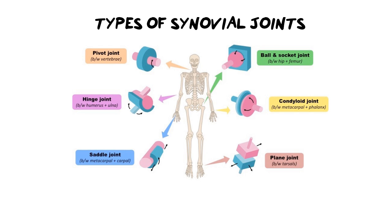The most common type of synovial joint is a ball and socket joint. As the name describes, it is the rounded end of a bone sitting against another bone that is rounded in the opposite way — it's a socket. We see this in our hips but also in our shoulders, and it allows for 360-degree movement.